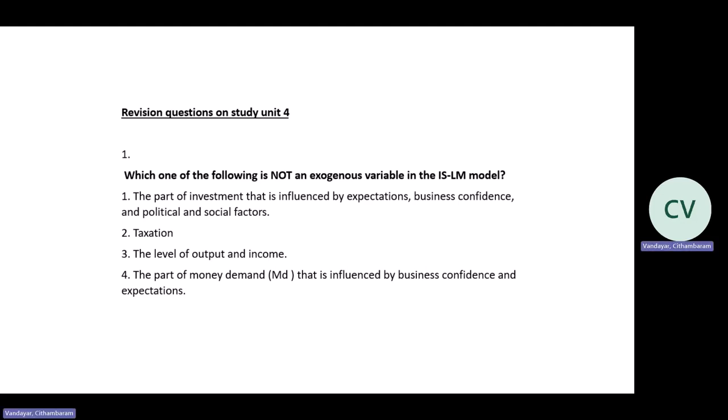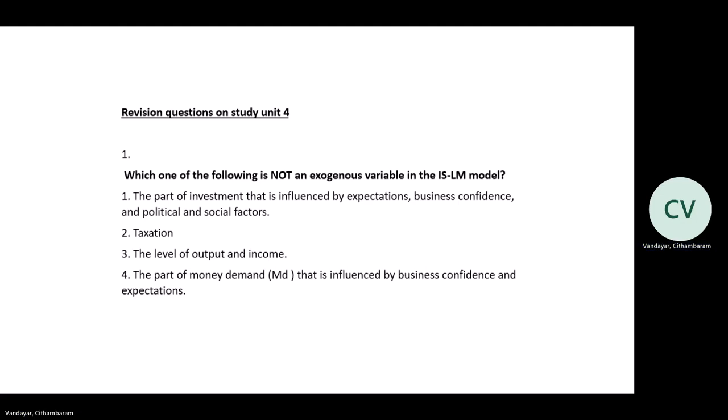The third option is the level of income and output — that is the correct answer, as the level of income and output is endogenous. The fourth option — the part of demand for money that is influenced by business confidence and expectations — is exogenous.